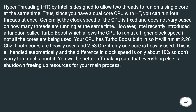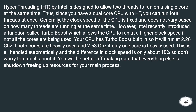Hyper-threading, or HT, by Intel is designed to allow two threads to run on a single core at the same time. Thus, since you have a dual-core CPU with HT, you can run four threads at once. Generally, the clock speed of the CPU is fixed and does not vary based on how many threads are running at the same time.